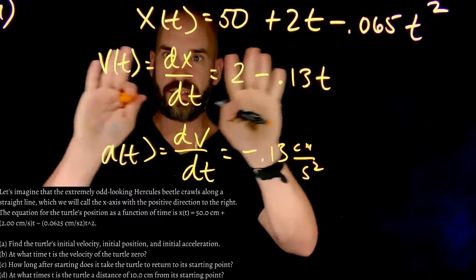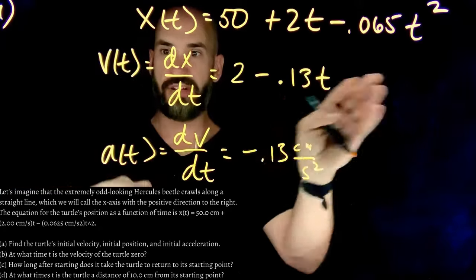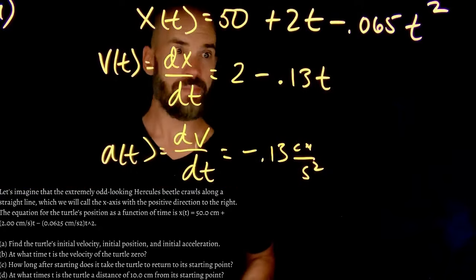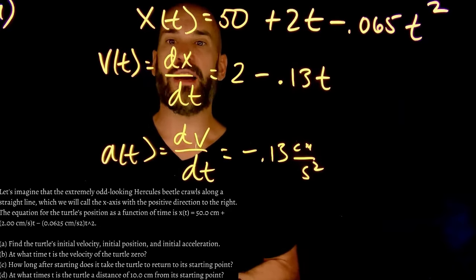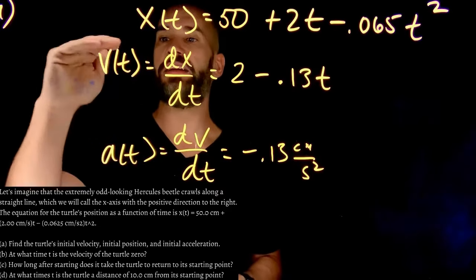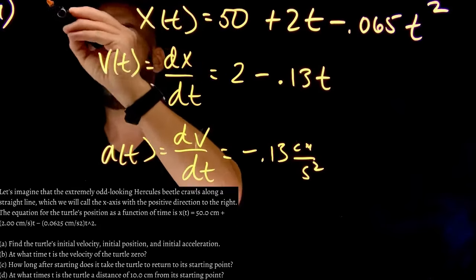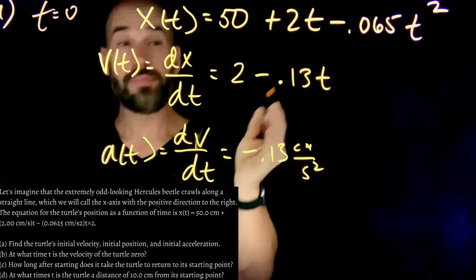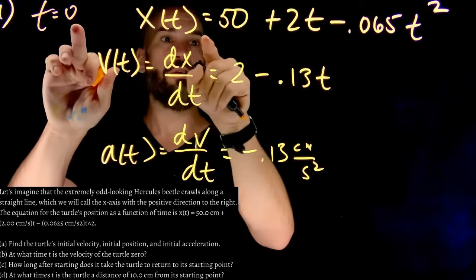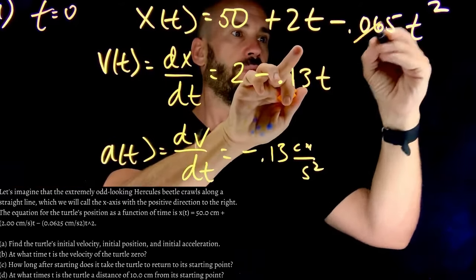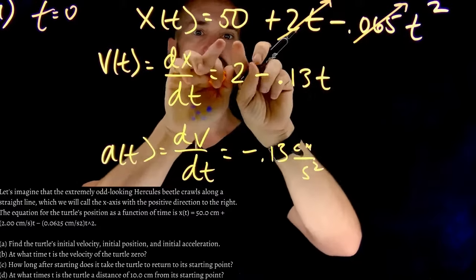So this is our position versus time, our velocity versus time, and our acceleration versus time graphs. So we want to find out what is the initial position, the initial velocity, initial A. So initial just happens at t equals 0. Am I right? I'm right. So I put 0 in for here, here, and here. This goes away. This goes away.